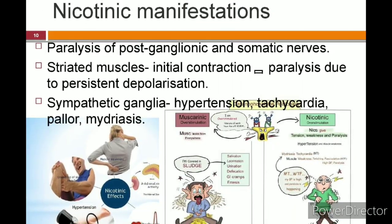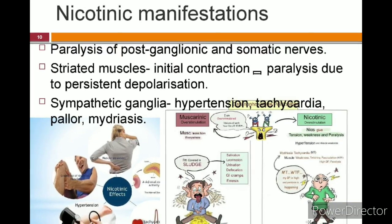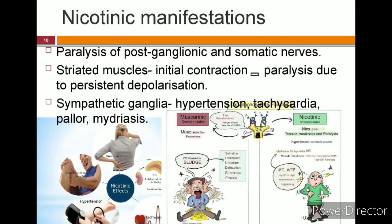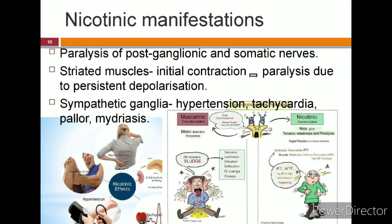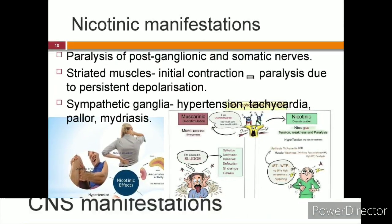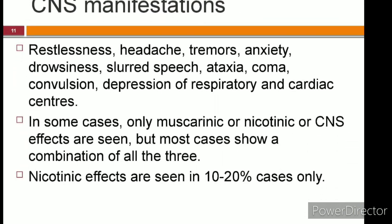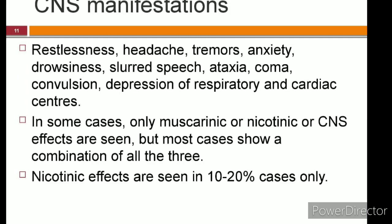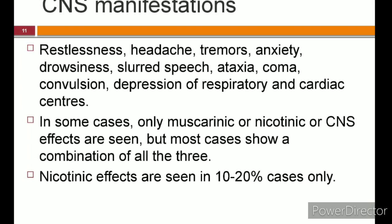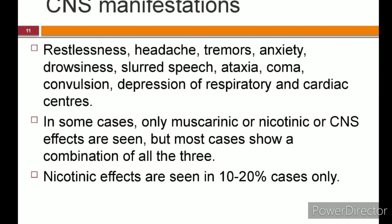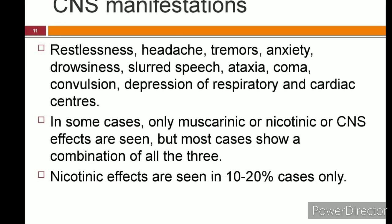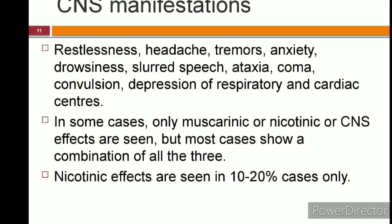The nicotinic symptoms are due to paralysis of post-ganglionic and somatic nerves; their effects are directly inverse to the muscarinic manifestations. The mnemonic is 'NIC gives tension, weakness, and paralysis': tension refers to hypertension, weakness means muscular weakness and fasciculations which later lead to paralysis. CNS manifestations include exaggerated states like restlessness, tremor, anxiety, and headache, followed by a depressed state: drowsiness, slurred speech, ataxia, convulsion, coma, and finally depression of respiratory and cardiovascular centers. In some cases only muscarinic, CNS, or nicotinic effects are seen, but mostly there is a combination of all three. Isolated nicotinic effects are seen in only 10–20% of cases.